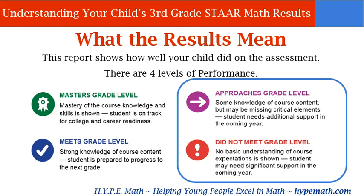The first level is 'Masters Grade Level,' which shows mastery of course knowledge and skills — the student is on track for college and career readiness. The second is 'Meets Grade Level,' indicating strong knowledge of course content and that the student is prepared to progress to the next grade. The third level is 'Approaches Grade Level,' meaning some knowledge of course content but may be missing critical elements.